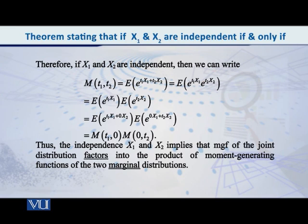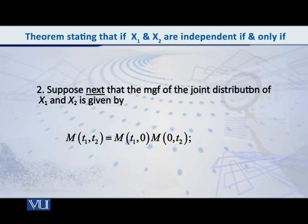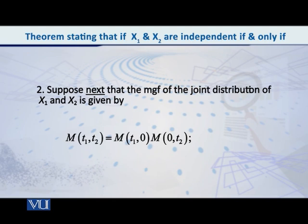Now let's begin the second part — the reverse direction. We are going to assume that the MGF of the joint distribution of X1 and X2 satisfies: M(T1, T2) = M(T1, 0) · M(0, T2). Our target is to show that if this equation holds, it means that X1 and X2 are independent.